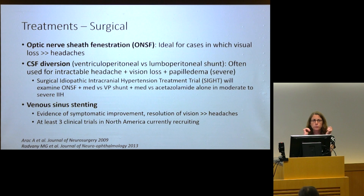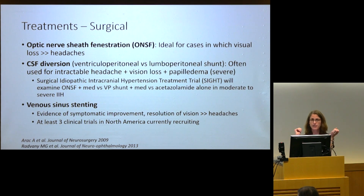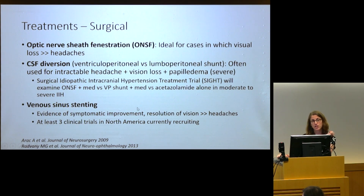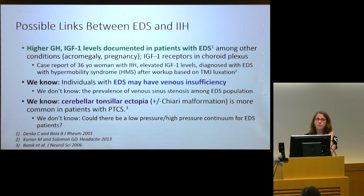When treatments fail, surgical colleagues need to intervene. We tend to favor CSF diversion over optic nerve sheath fenestration, though both have evidence. The SITE trial is currently comparing these two surgical modalities for patients with progressive visual loss and headaches despite maximal medical therapy. Venous stenting isn't in that trial but has substantial evidence behind it, though it's controversial because of concerns about stent migration. At least three clinical trials in North America are currently recruiting for venous stenting in this condition.